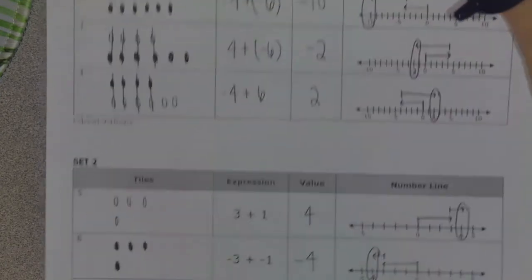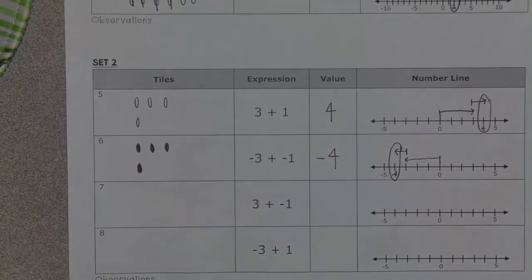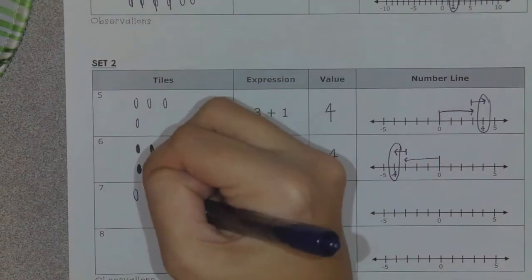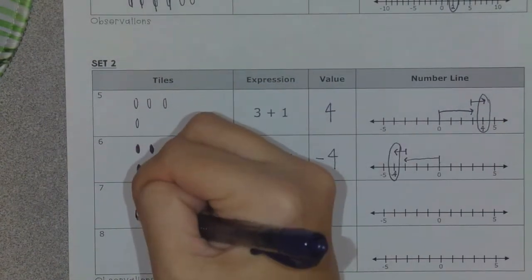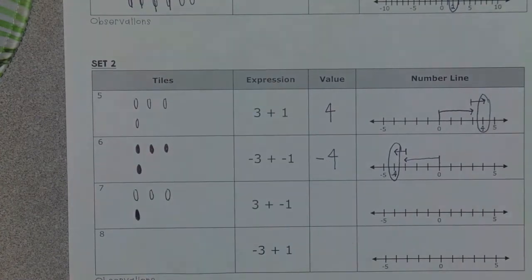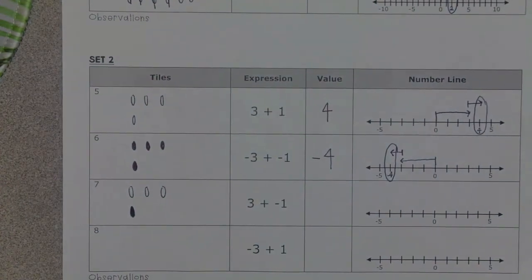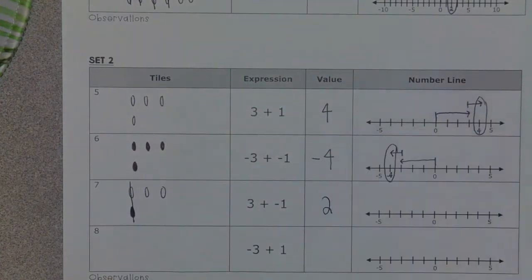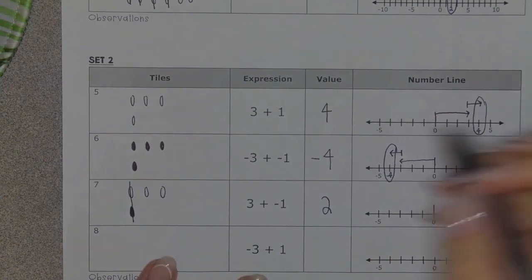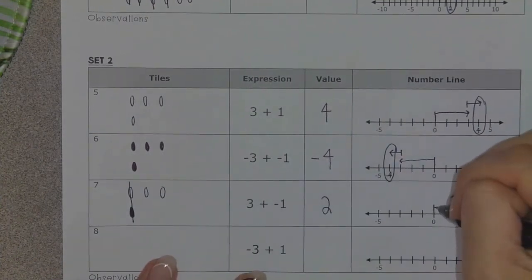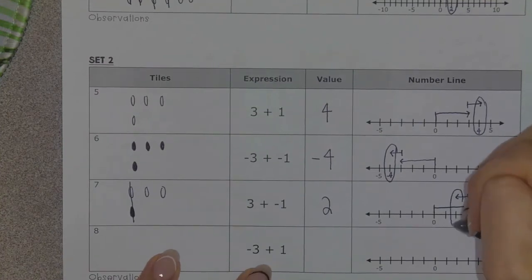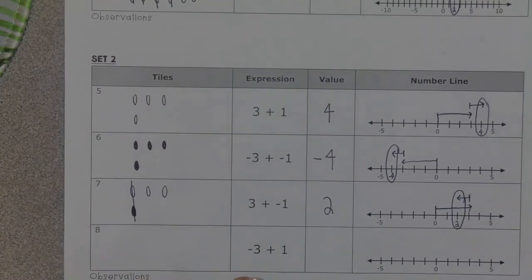Something funky is happening when I add a positive and a negative together. I have positive three, so I'm going to draw three unshaded circles, plus negative one. I need to create zero pairs — one positive and one negative — and I'm left with the value of positive two. So if I start at zero, I have positive three so I move to the right three spaces. Then I have negative one, so I move to the left one space. Wherever it lands is the value — so I have a value of two.